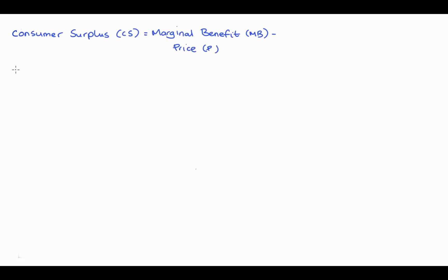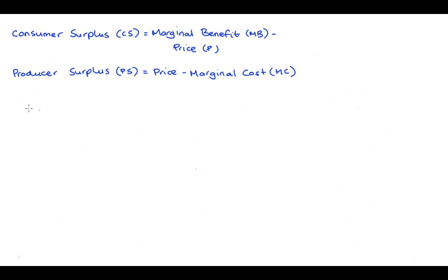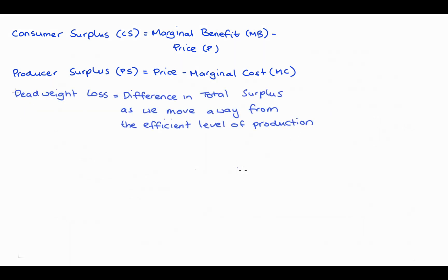In other videos I've described consumer surplus as the difference between the marginal benefit of consumption and the price, producer surplus as the difference between the price and the marginal cost of production, and deadweight loss as the difference in total surplus as we move away from the efficient level of production, which is the outcome most commonly associated with perfect competition. These ways of thinking about welfare analysis are perfectly good. In this video I wanted to link these concepts to the idea of trade, and I think this gives us a more rudimentary understanding of what's happening.